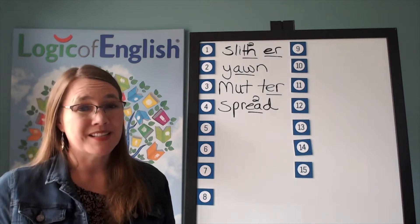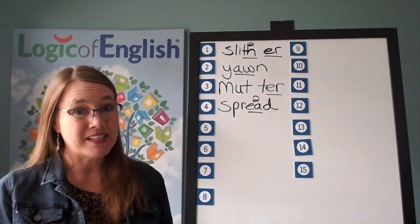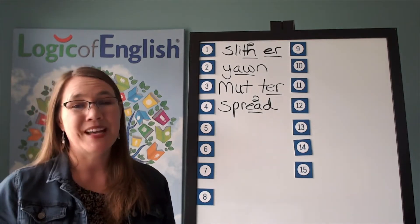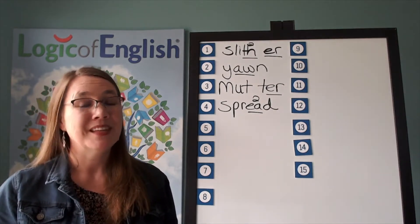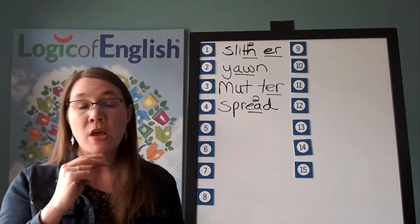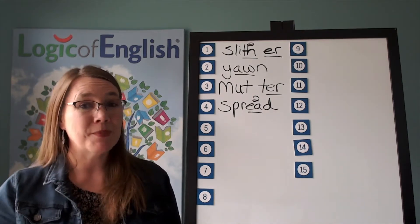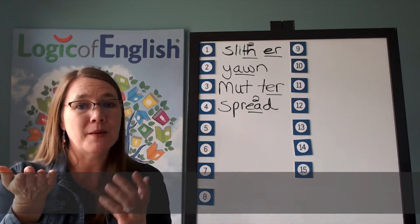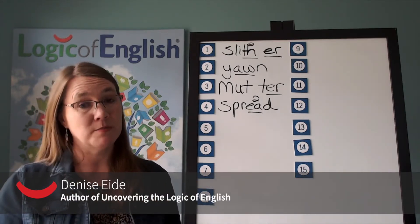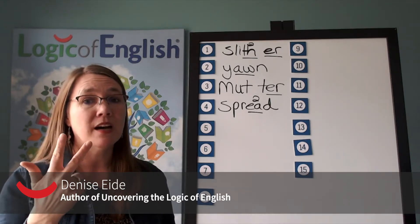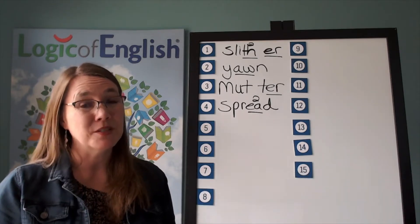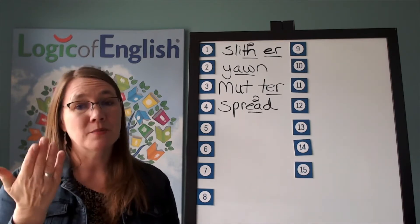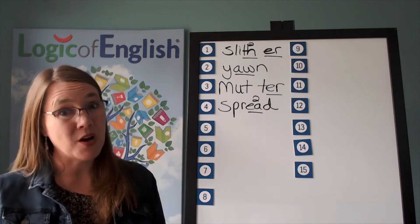The next word is plummet. The rock will plummet off the cliff if we're not careful. Plummet. Go ahead and say plummet. How many syllables? Two. We will say to spell plummet. Let's sound it out. The first syllable is plum: p-l-u-m. The second syllable is met: m-et. Go ahead and write plummet, sounding it out.